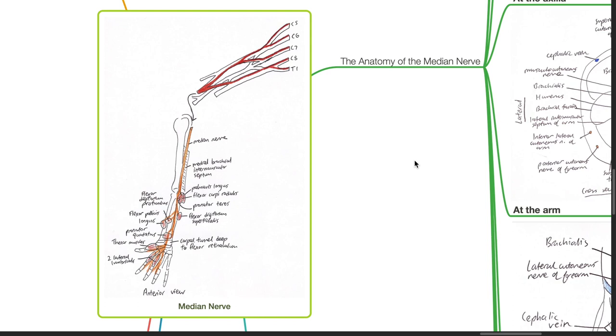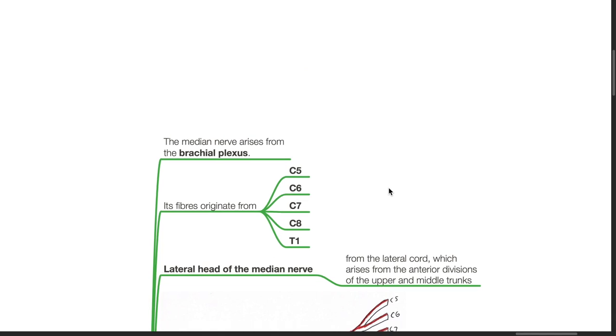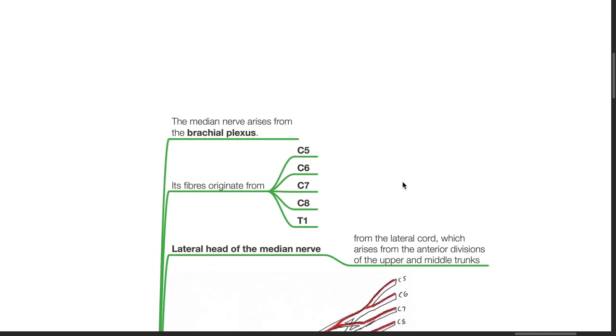Good evening, Dr. Phil here. Today we will be discussing the median nerve. Anatomy. The median nerve arises from the brachial plexus.